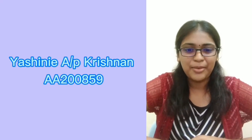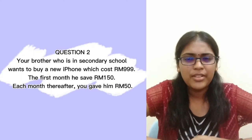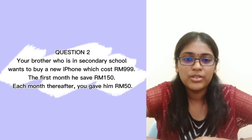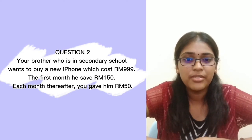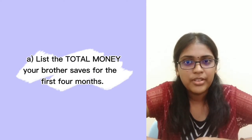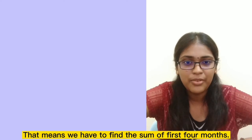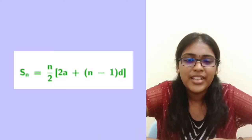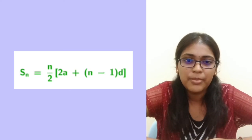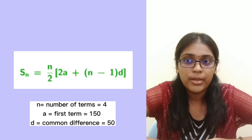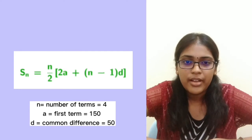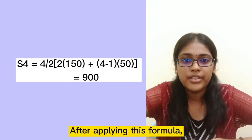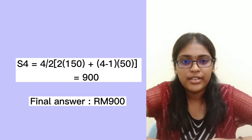Hi, my name is Yashini. I am from Group 8. I will explain the solution for Question 2. Your brother, who is in secondary school, wants to buy a new iPhone which costs 999 Ringgit. For the first month, he managed to save 150 Ringgit, and each month thereafter you gave him 50 Ringgit. Part A asks for the total amount saved for the first 4 months, meaning we need to find the sum S_n. We apply the formula: S_n = n/2 × (2A + (n−1)D), where n = 4, A = 150, and D = 50. After applying this formula, the final answer is 900 Ringgit.